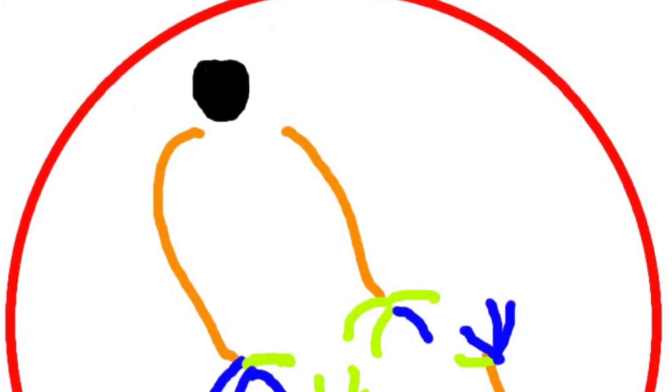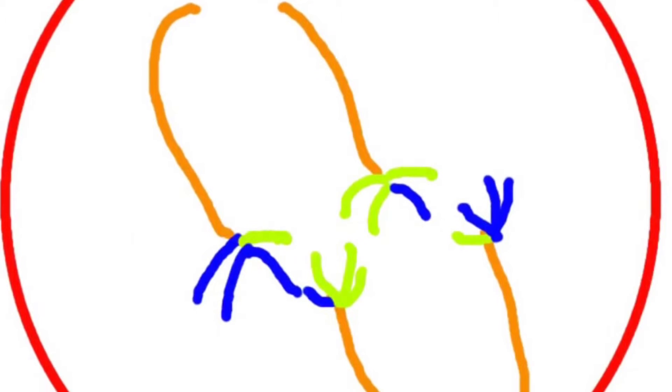Early in anaphase I, the tetrads then separate, and the paired chromatids move along the spindles to their centrioles.